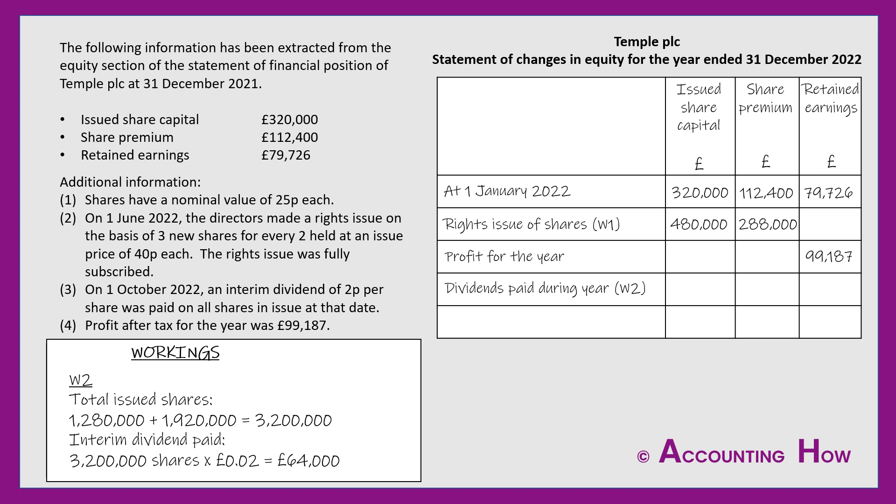Dividends are the reward to shareholders that come from the profit made during the year, so I deduct £64,000 from the retained earnings column. The £99,187 profit after tax increased retained earnings, but then £64,000 was paid out as dividends.